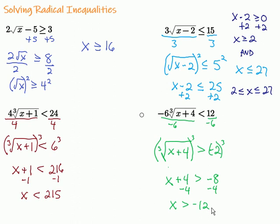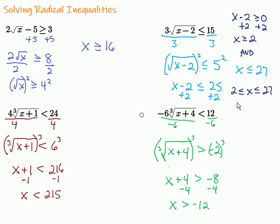Solving radical inequalities is just like solving radical equations, except we have to remember a couple of things. One: don't forget the rules for solving inequalities — if we multiply or divide by a negative on both sides, flip that inequality symbol. Also, pay close attention to the radical: if it's an even root like a square root, fourth root, or sixth root, make sure the value under that root doesn't go negative. If that's the case, do another inequality keeping that expression under the root greater than or equal to zero, then tie those together. Hope this video was helpful. Keep working hard on your math — you can do it.